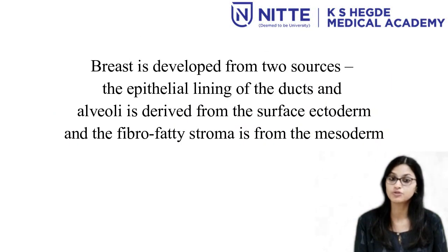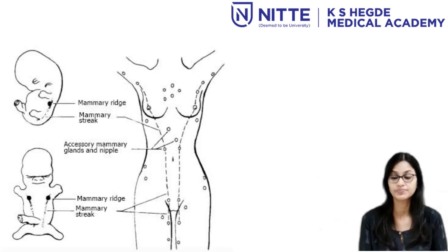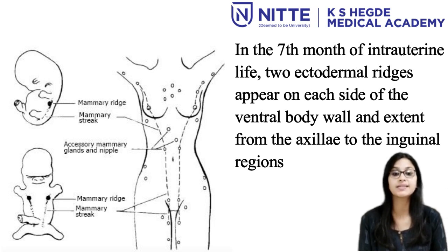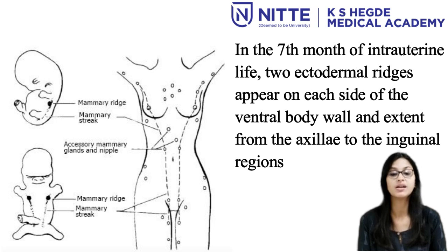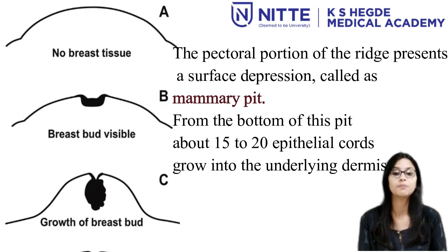The breast is developed from two sources. The epithelial lining of the ducts and the alveoli is derived from the surface ectoderm, and the fibro-fatty stroma is from the mesoderm. In the seventh week of intrauterine life, two ectodermal ridges appear on each side of the ventral body wall and extend from the axillary to the inguinal regions. In humans, the milk ridges in the pectoral region persist and give rise to the development of the breast. The rest of the ridges regress. The axillary tail of the breast represents the cephalic end of the milk ridge.